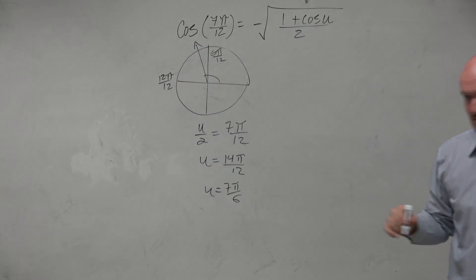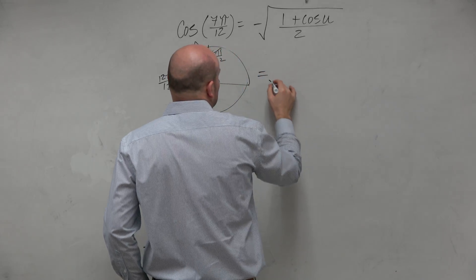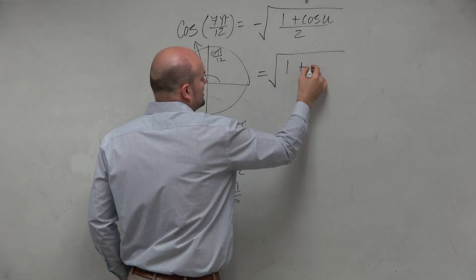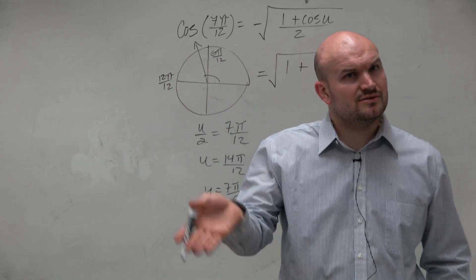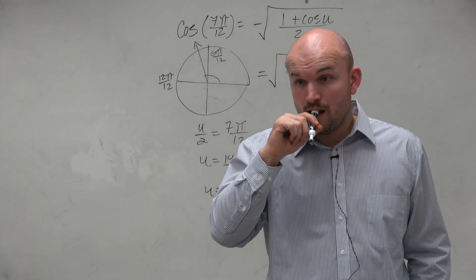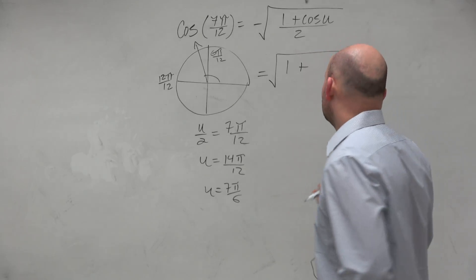So then we have 1 plus, what is the cosine of 7π over 6? Negative square root of 3 over 2. Very good.